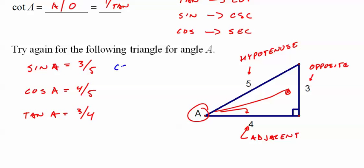That's all I memorized. Then I just remember that cosecant goes with sine, and it's the flip. Just take the reciprocal of 3 fifths. You get 5 thirds.